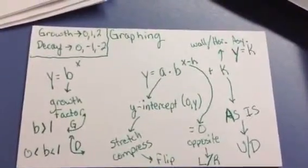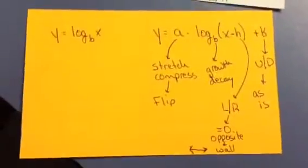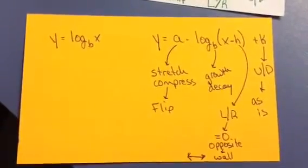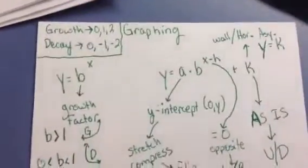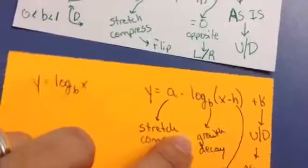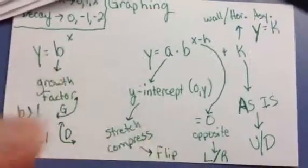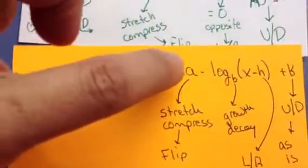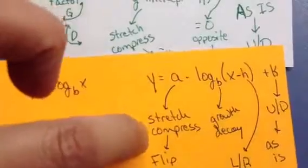For the graphing part, you might want to have your note card out. Let's talk about the similarities. The job of b, whether it's an exponent or a log, is to tell you if it's growth or decay: if it's bigger than 1, it's growth; if it's smaller than 1, it's decay. In exponential functions, a was our y-intercept and tells you stretch, compress, or flip. For the log problems on the test, a is also the intercept but it's going to be the x-intercept, and it still tells you stretch, compress, or flip.